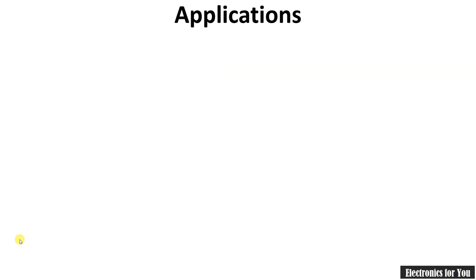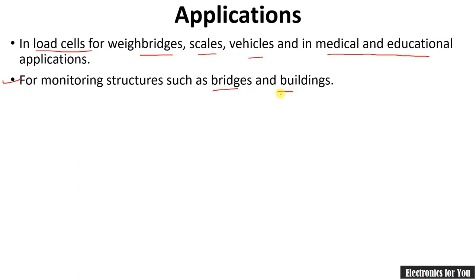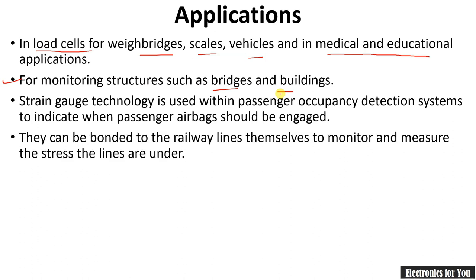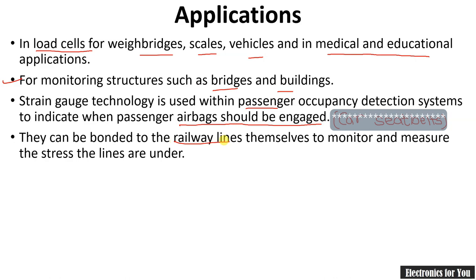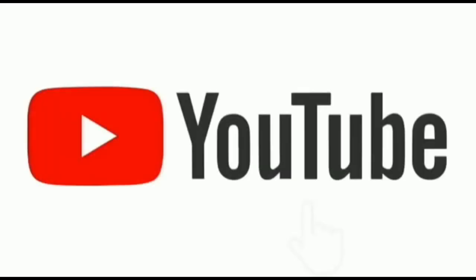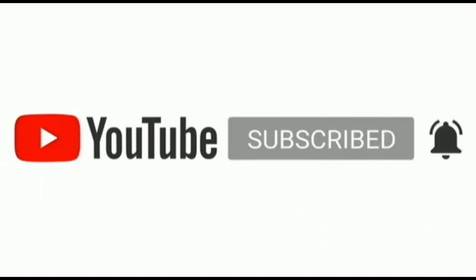Now let's see some applications of the strain gauge. Strain gauge is used in load cells for weighbridges, scales, vehicles, and medical and educational applications. They are used for monitoring structures such as bridges and buildings. Basically, strain gauge is used everywhere where metal strain will be present — it is used in passenger occupancy sensors and can be bonded to railway lines. Friends, if you like this video, please subscribe to our channel and press the bell icon for notifications. Like, comment, and share. Thank you.